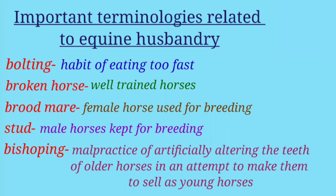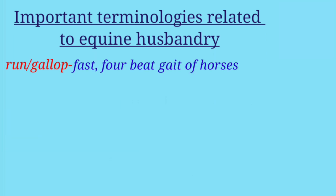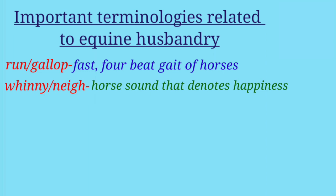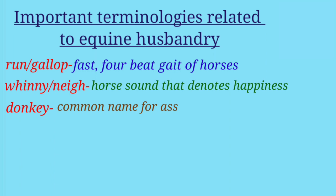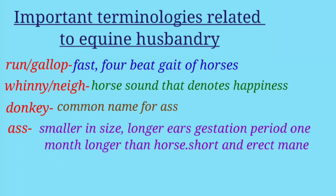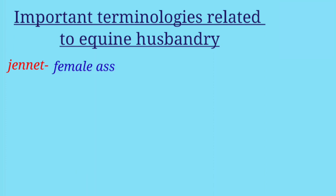'Run' or 'gallop' is the fast four-beat gait of horses. 'Whinny' or 'neigh' is the horse sound that denotes happiness. 'Donkey' is the common name for ass. Donkeys are small in size, have longer ears than horses, a gestation period one month longer than that of horses, and have a short, erect mane.